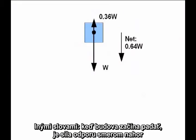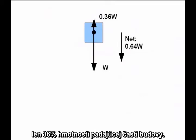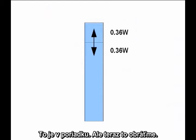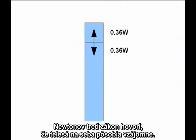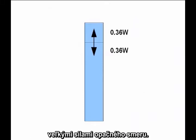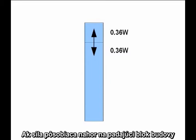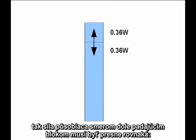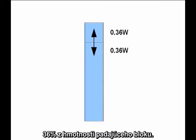In other words, once it starts falling, the upward resistive force is only 36% of the weight of the falling section of the building. Newton's Third Law says interactions between objects work both ways — the forces two objects exert on each other are always equal and opposite. If the upward force acting on the falling block is 36% of the weight of the falling block, the downward force exerted by the falling block must be exactly the same: 36% of the weight of the falling block.